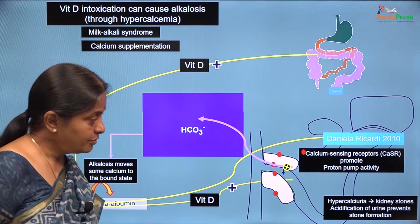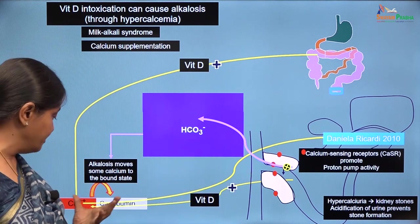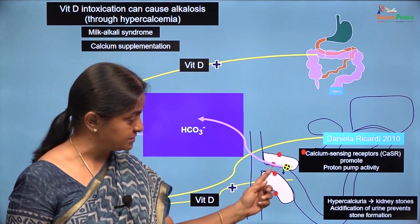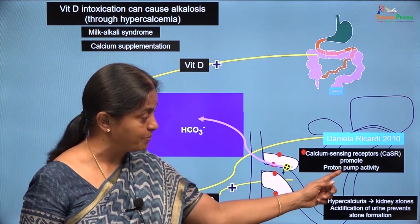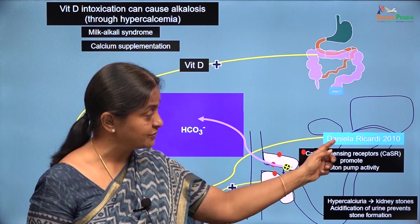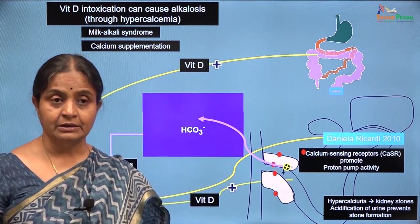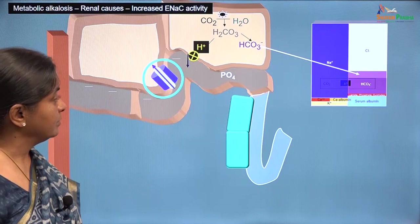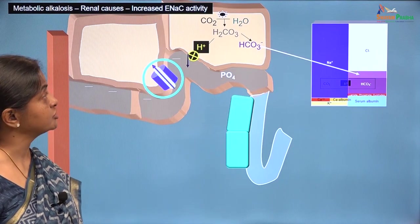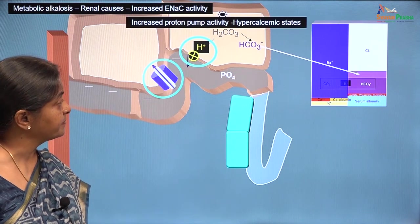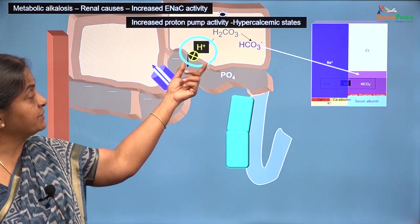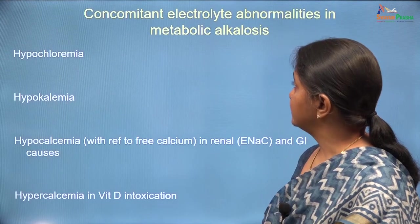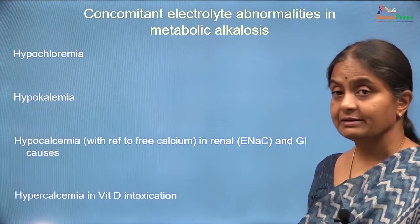The reference for induction of metabolic alkalosis by hypercalcemia through calcium sensing receptors which sense the high calcium and stimulate the proton pumps is Daniel Riccardi, the pioneer in the field of calcium sensing receptors. When we started we looked at 6 causes of metabolic alkalosis where ENAC activity was increased, but now we are looking at hypercalcemia where the proton pump activity per se may be increased. We will now look at concomitant electrolyte abnormalities in metabolic alkalosis.